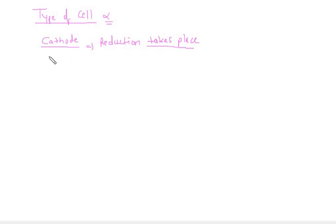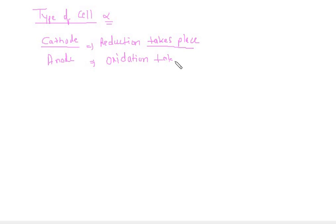And anode is that electrode on which oxidation takes place. This is the basic definition of cathode and anode.